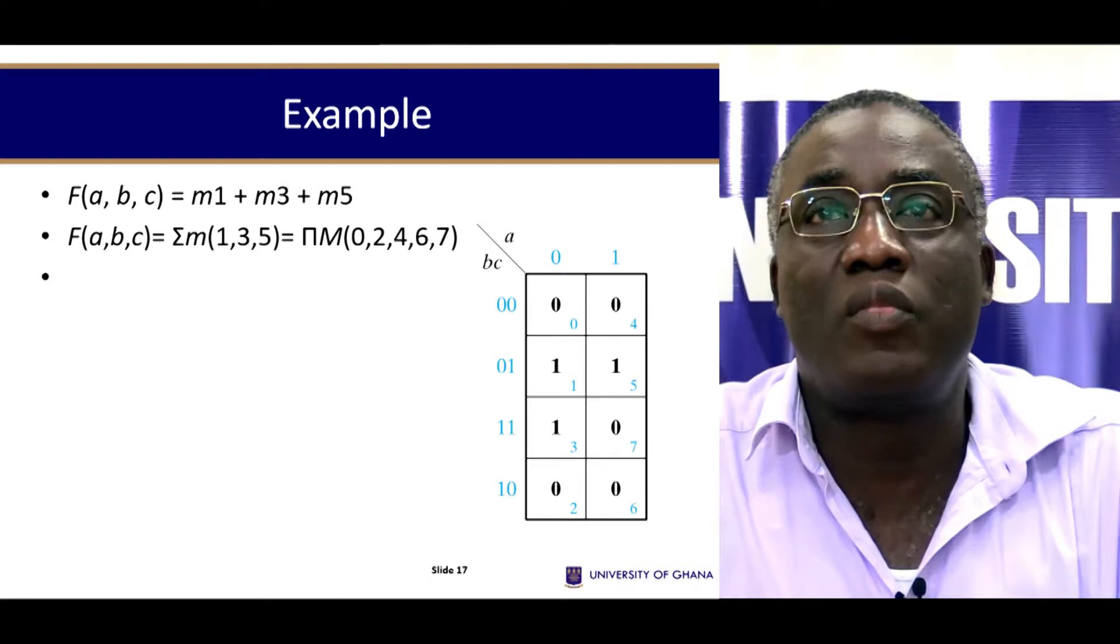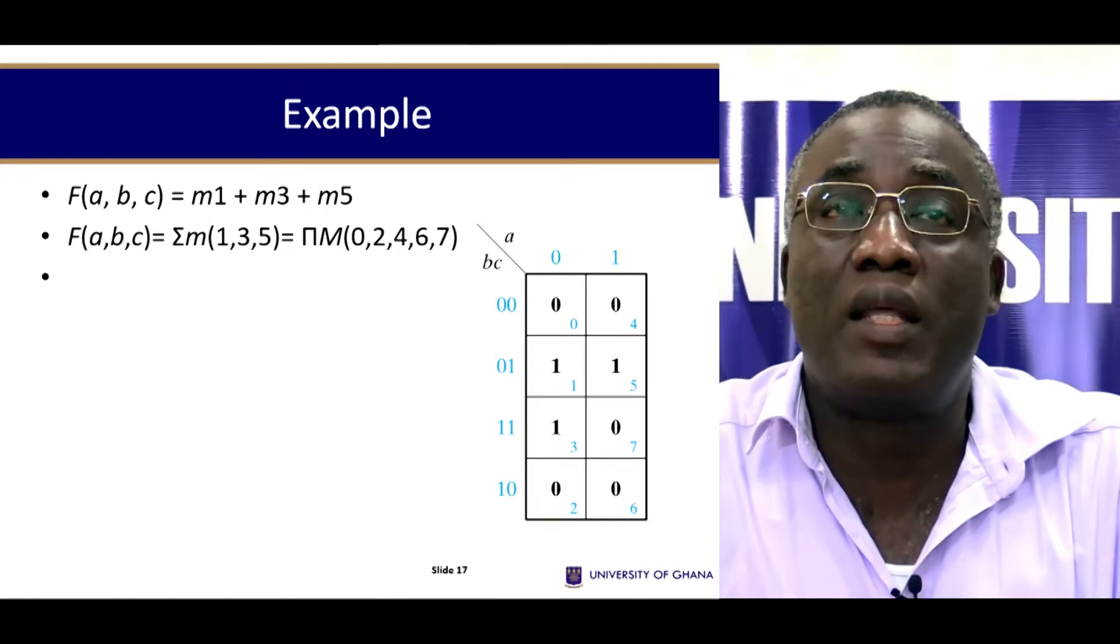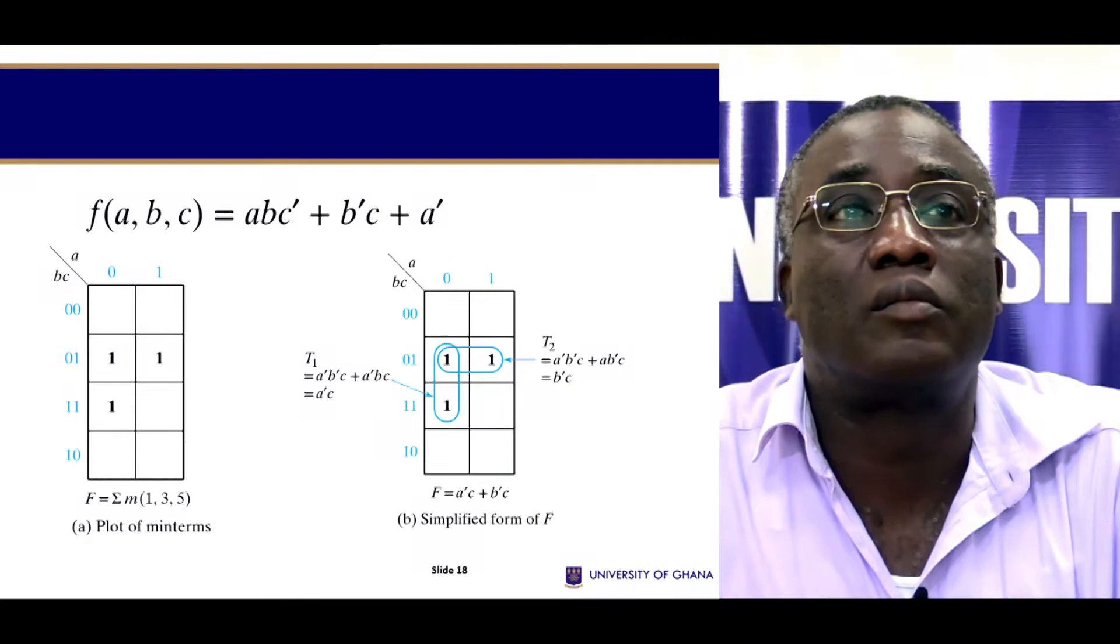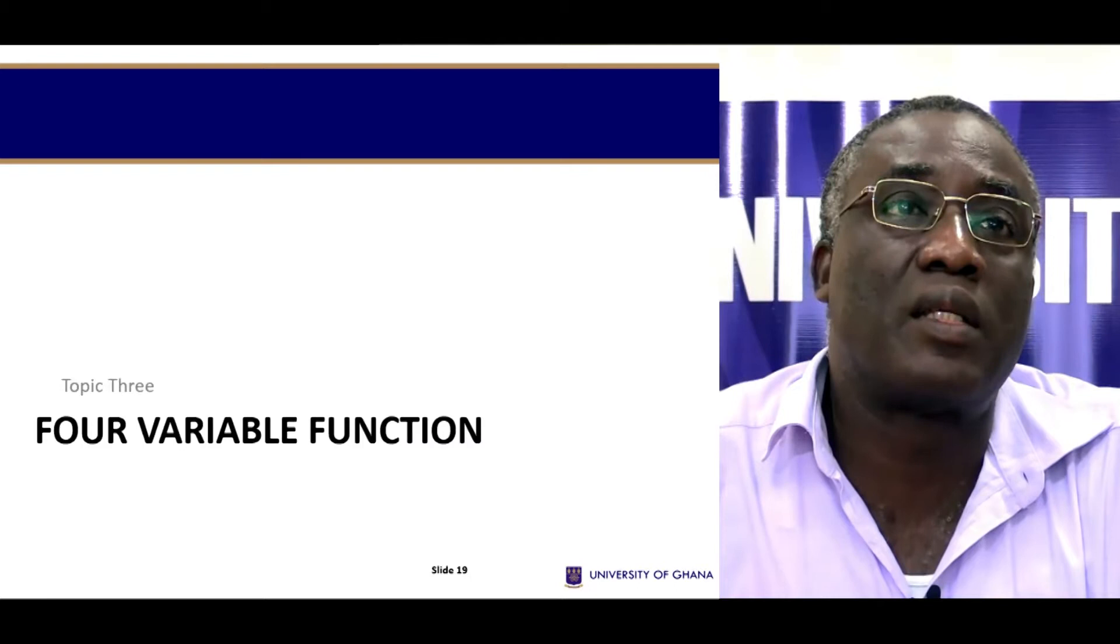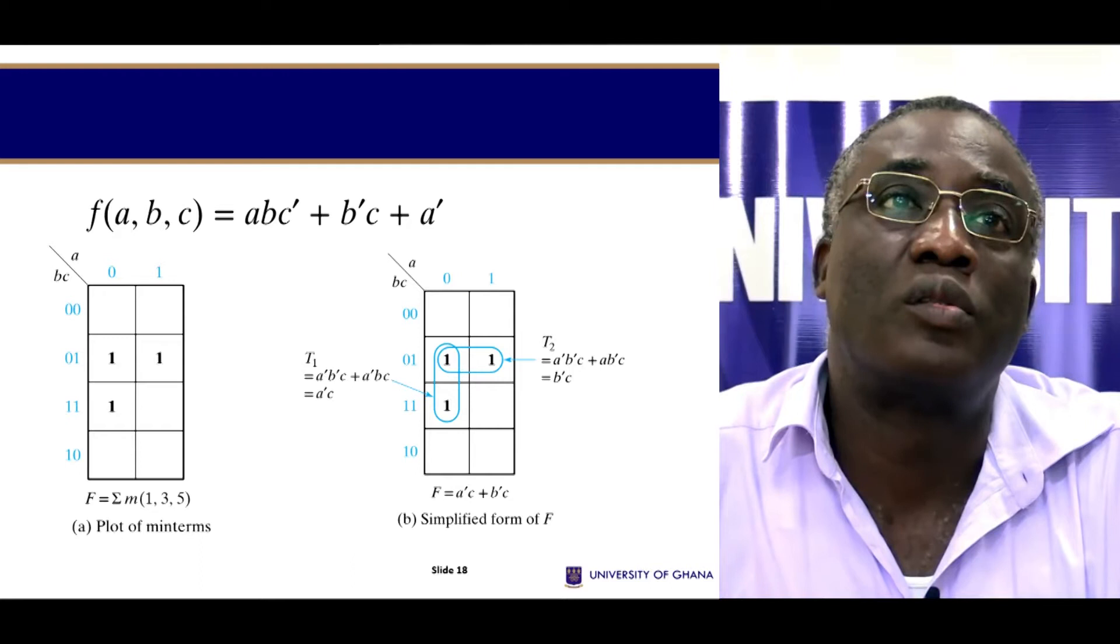So we can actually use the mean term representation. Instead of writing the ones, you can put actually the M1, M2, and so on to represent them in the table, to represent the information in the table. So you can locate them, the cell positions, number them according to decimal. So this zero, one, two, three, four, five, six, and seven. And therefore once you've numbered them, you can then put the mean terms in there. And once you know which mean terms you need, you circle them accordingly.